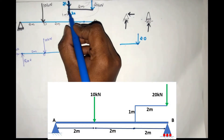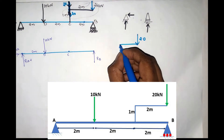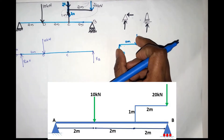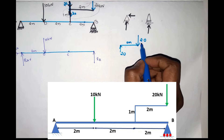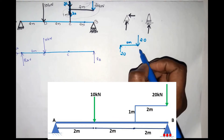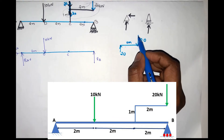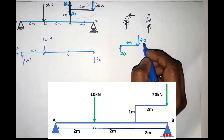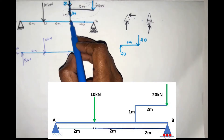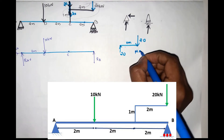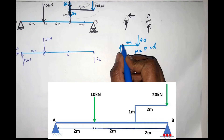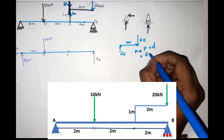We have an upward force and a downward force of 20kN with a distance of 2m. The direction is opposite — these forces create a moment. This moment is equal to force multiplied by the arm of the couple distance. The arm of the couple gives a moment of 20 × 2 = 40 kNm.